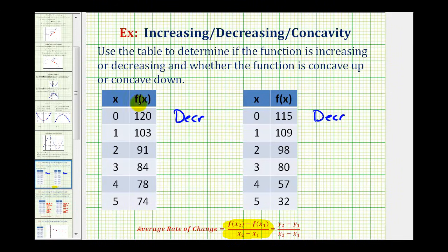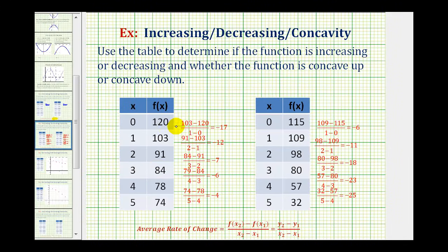There are quite a few calculations here, so I've already set this up on the next slide. Here we have the average rate of change from x equals 0 to 1, from 1 to 2, from 2 to 3, 3 to 4, and 4 to 5.